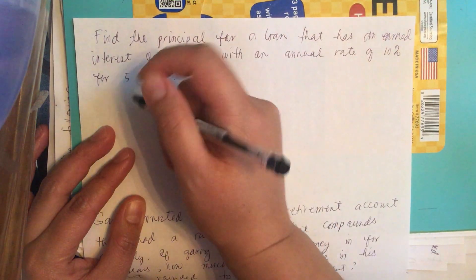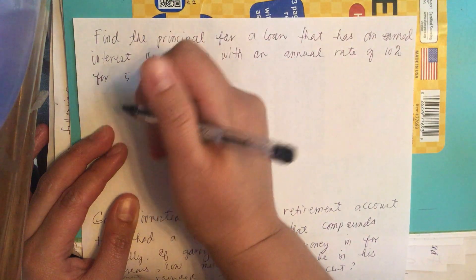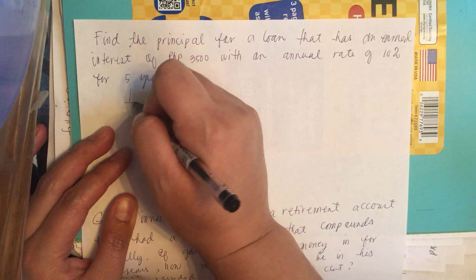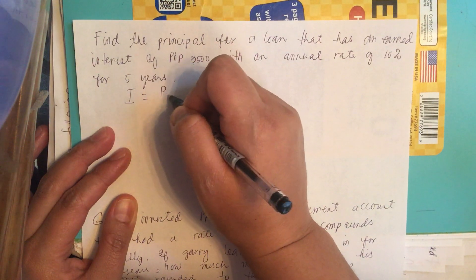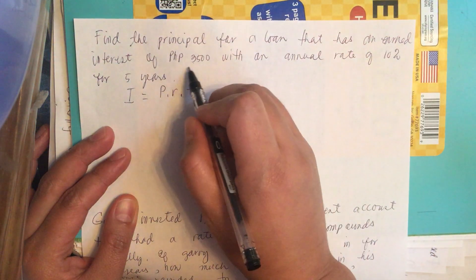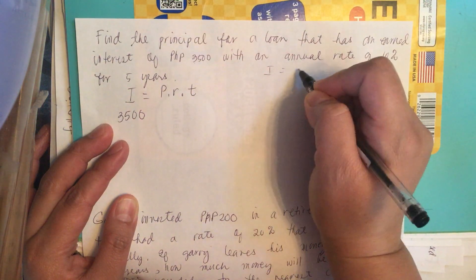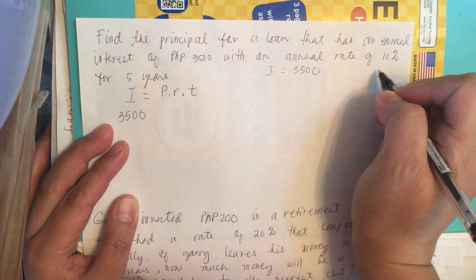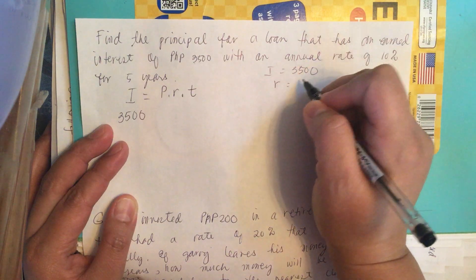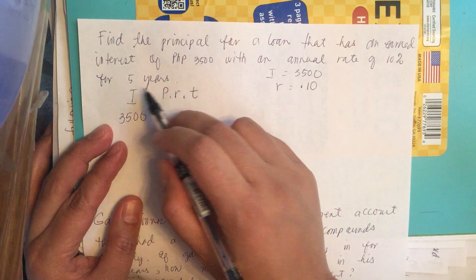The formula for simple interest, when the interest earned is given, we can use the shortcut formula, which is I is equal to P times R times T. And they give us the interest earned, which is 3,500 pesos. So I is equal to 3,500 and R is equal to 10% or we change it to decimal, so it is 0.10. And then T is equal to 5.